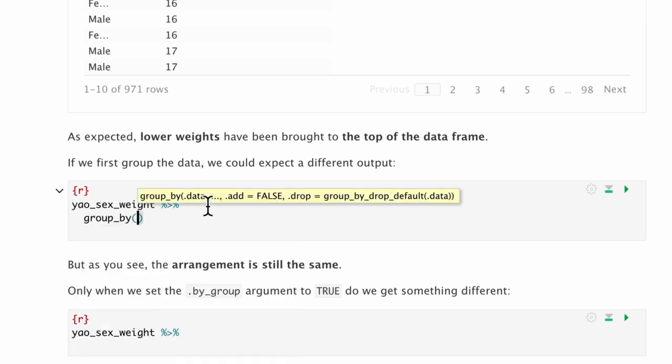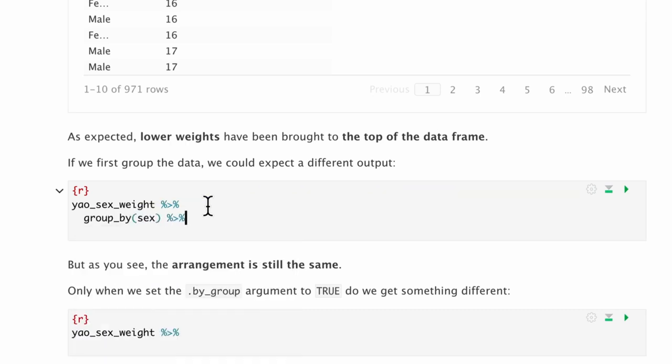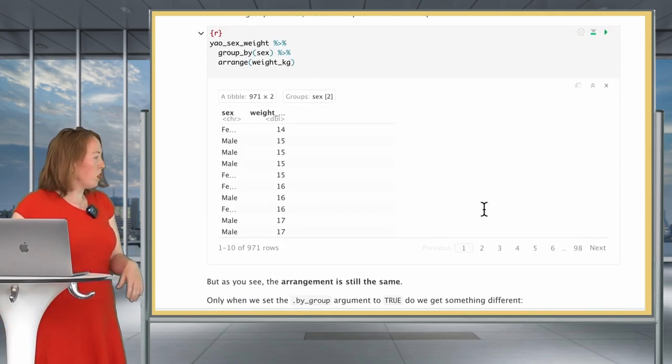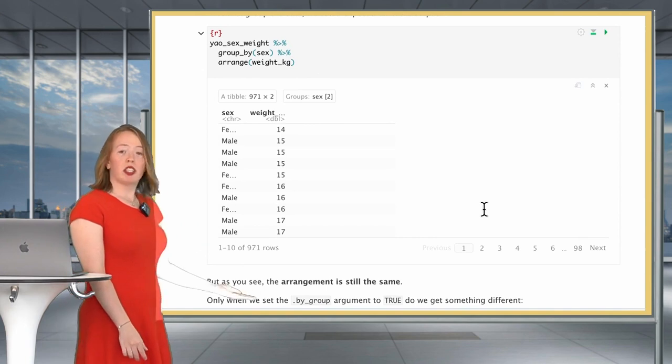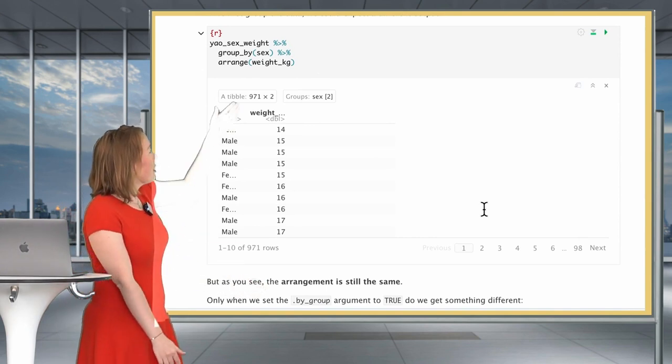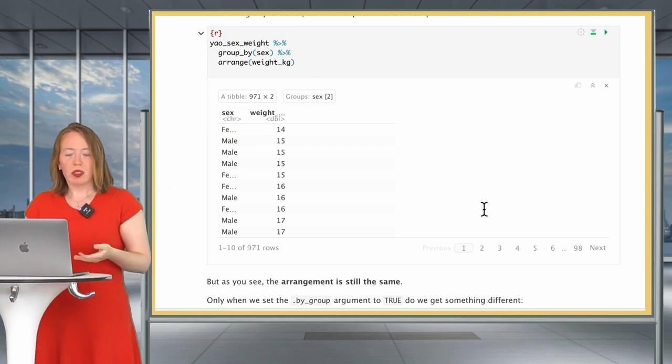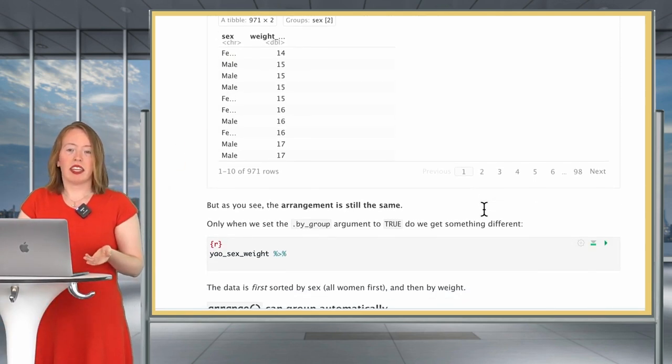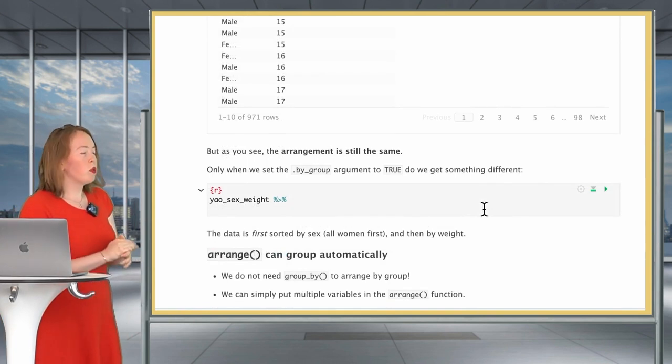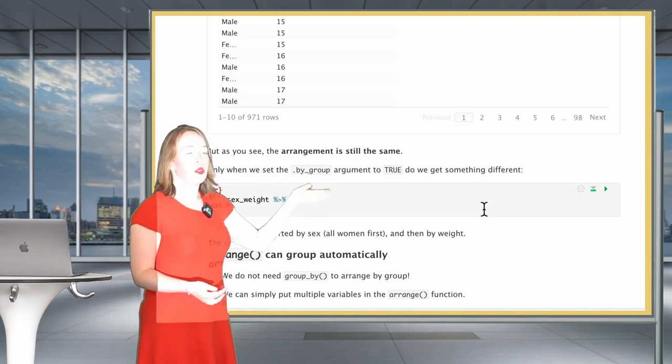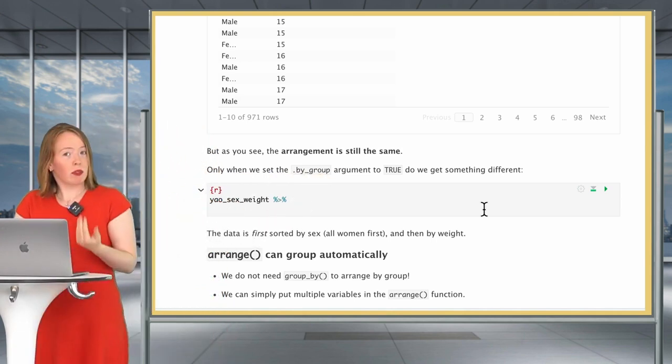The way of writing this is using the verb arrange with the weight_in_kilogram variable. And what we can see here is, as we can expect, the lower weights have been brought to the top of the data frame. Now, what would happen if we were to group the data first before arranging it? We could expect a different output.